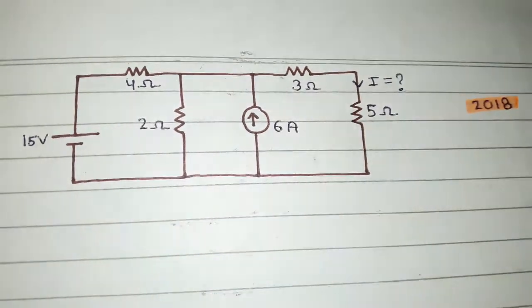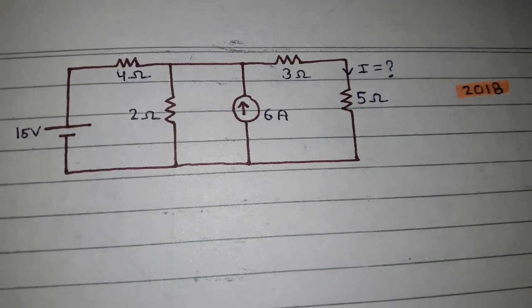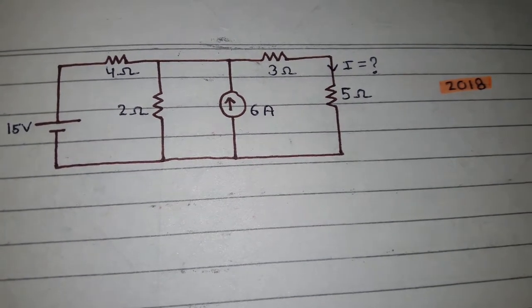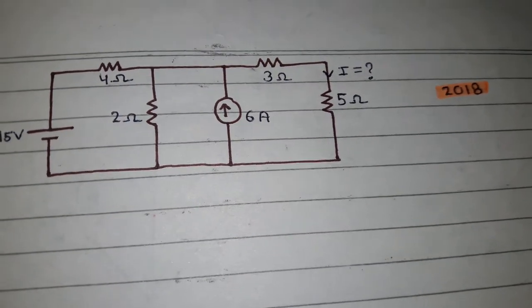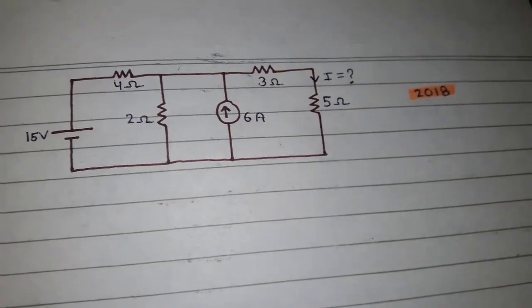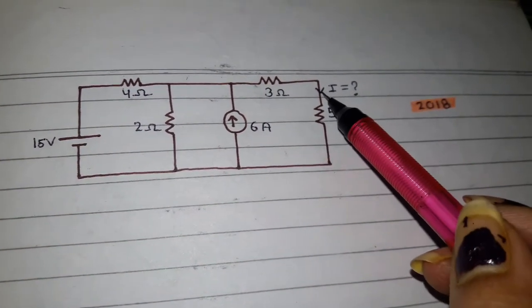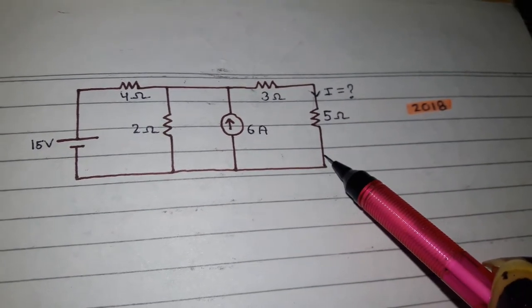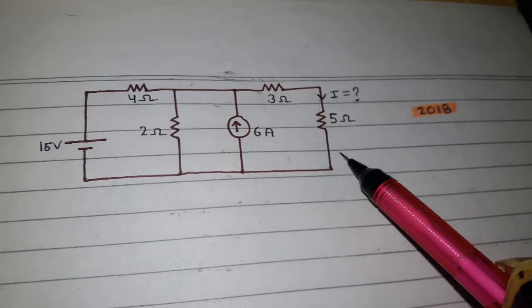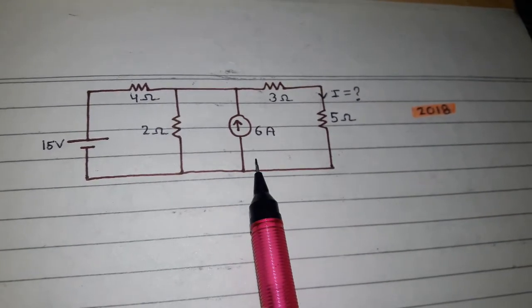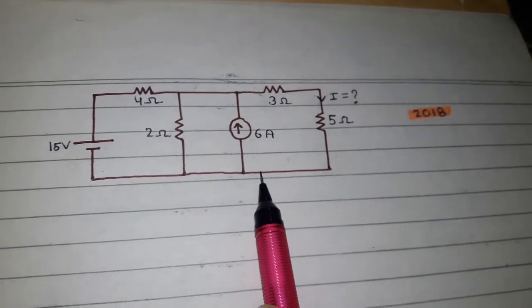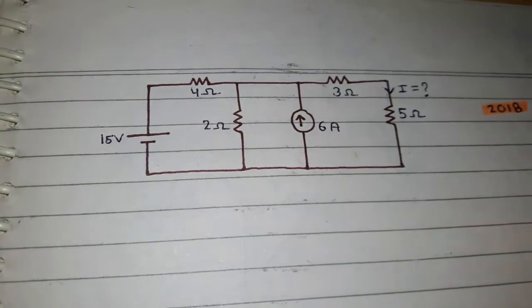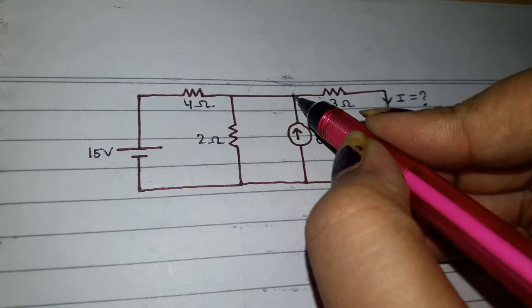This question is from UPSC Engineering Services Prelims 2018. It is pretty similar to what we covered in our previous video — you have to find the current through a particular resistance. It is straightforward, but this question has a bit of a twist. Let's see what the twist is by following all the steps. Let's assign our reference node.